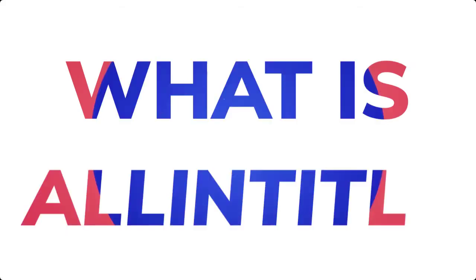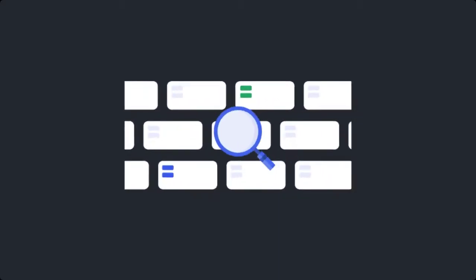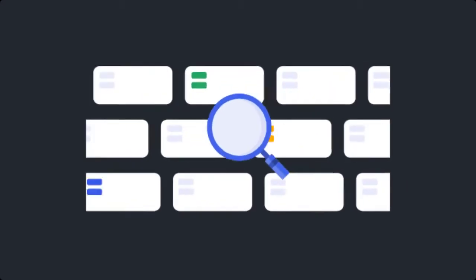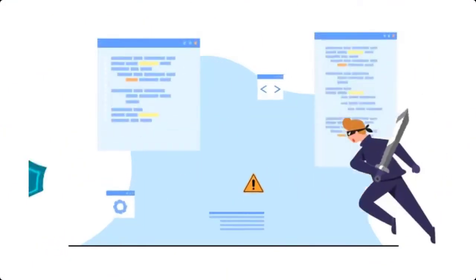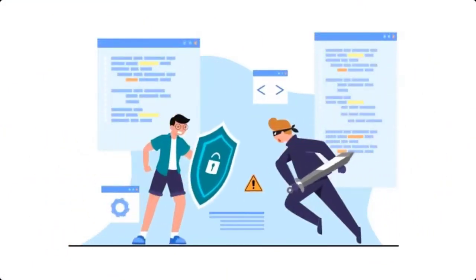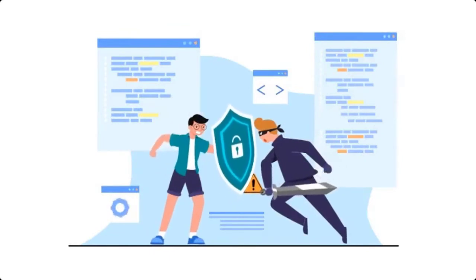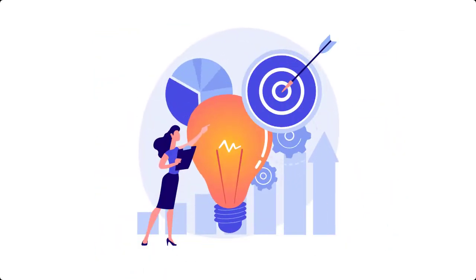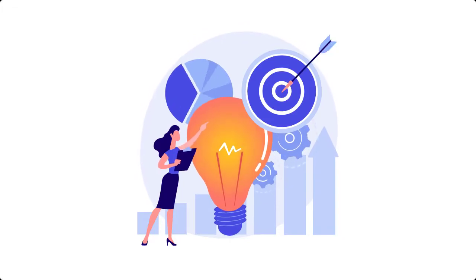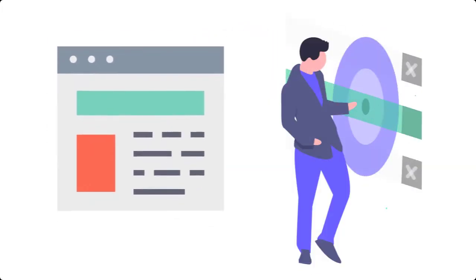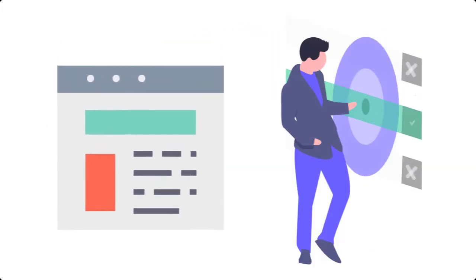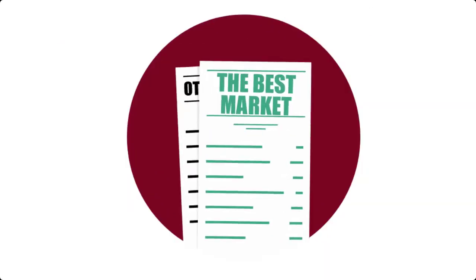What is allintitle in Google? Allintitle is a special search command to help you discover websites with certain keywords in their title. This is mostly used in SEO to find out how many true competitors you have for your targeted keywords — because only those who are targeting your keywords and also know what they are doing would actually place those keywords in the title tags, and doing it the right way.